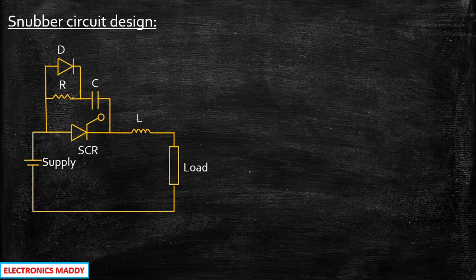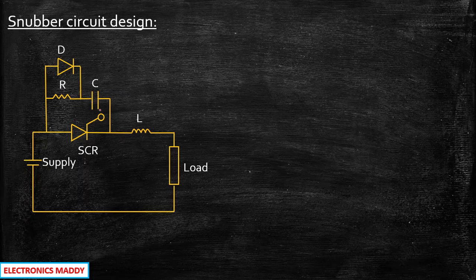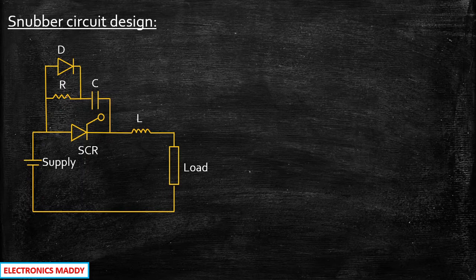A resistor is connected because once the capacitor has charged to its full value, it has to discharge somewhere — it will be discharging through the resistor R. A diode is used because when the capacitor is charging through one path, we avoid I²R losses in the resistive element during charging. We want the resistor only during discharge; during charging the current can flow through the diode path, and that is why a diode is used.